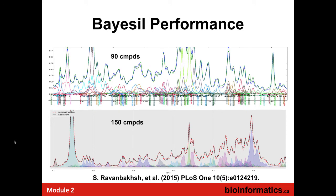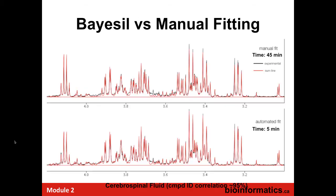This shows how complicated it can get. The top examples are a spectrum of 90 compounds; the bottom one is 150 different compounds — peaks on top of peaks on top of peaks. Well-trained humans can do this by hand, but most people wouldn't want to get that training, and so this is the advantage of having a computer doing the spectral deconvolution.